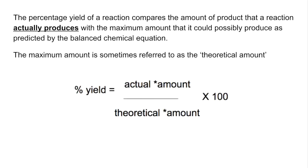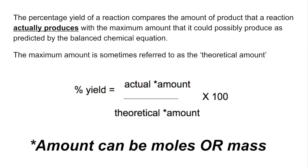The formula we use to calculate percentage yield is the actual amount divided by the theoretical or maximum amount, multiplied by 100 to get a percentage. You'll notice that the asterisked 'amount' can be in moles or mass.